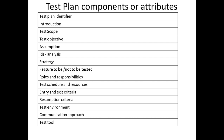What are the different components or attributes included in the test plan? The first is the test plan identifier. This test plan identifier is a number or unique identifier with a version number, and it is also used to identify a particular document uniquely.